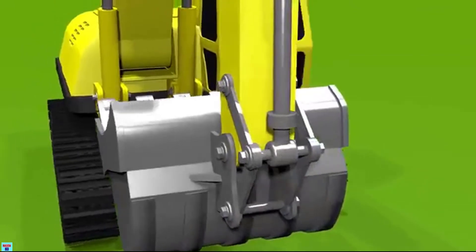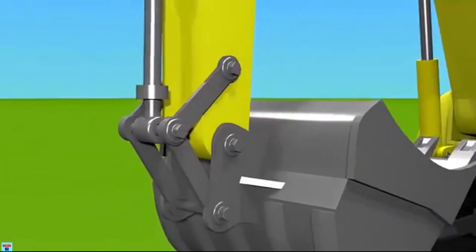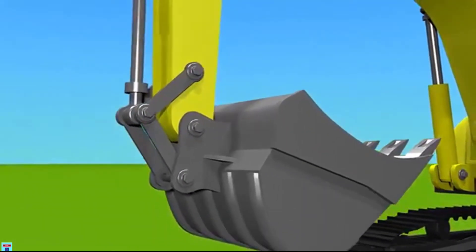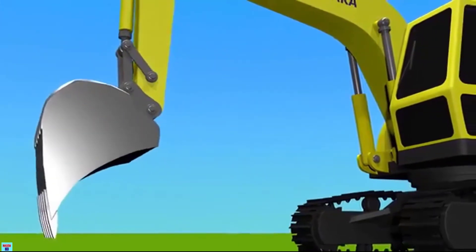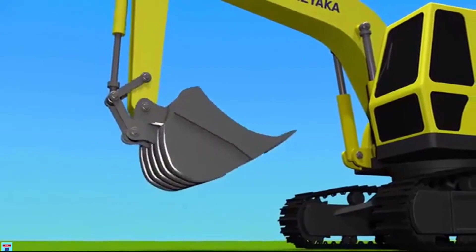This device, the one joining the bucket with the piston, is called an H-link or bucket linkage. Its mechanism allows the bucket to greatly flex and extend.